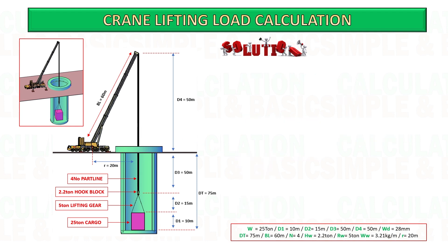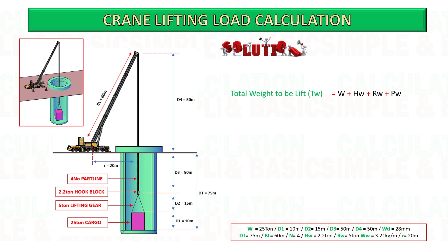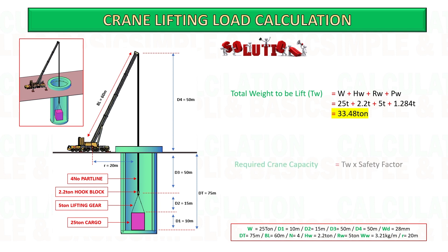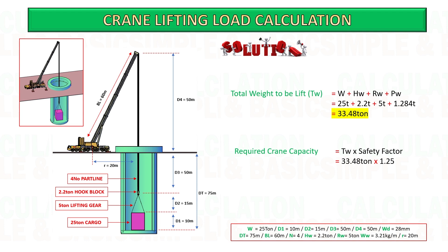After getting the weight of the part line, add all the weights together: hook block, lifting gear, part line weight, and cargo weight. Once you get the total weight, multiply it by the safety factor. I assumed 1.25 is required, giving the required crane capacity.